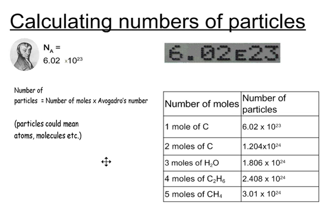Here are the answers. It doesn't really matter what we are working out the number of particles of, be it carbon, water, ethane or methane. All we're doing is using the Avogadro constant.